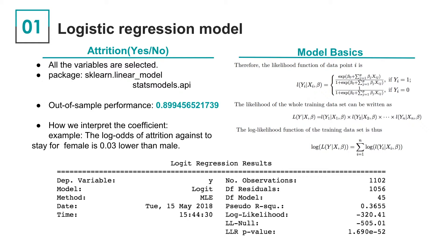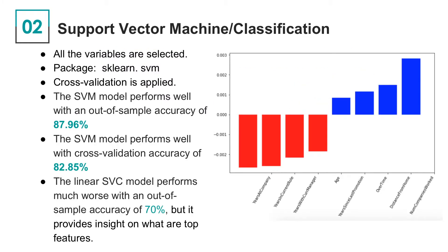The first model we train is logistic regression. We use all variables in the dataset and maximum likelihood estimation, which is shown on the right, is applied for the training process. The out-of-sample accuracy is 89.9%, which is relatively high. However, we could not identify the top important features in this case.